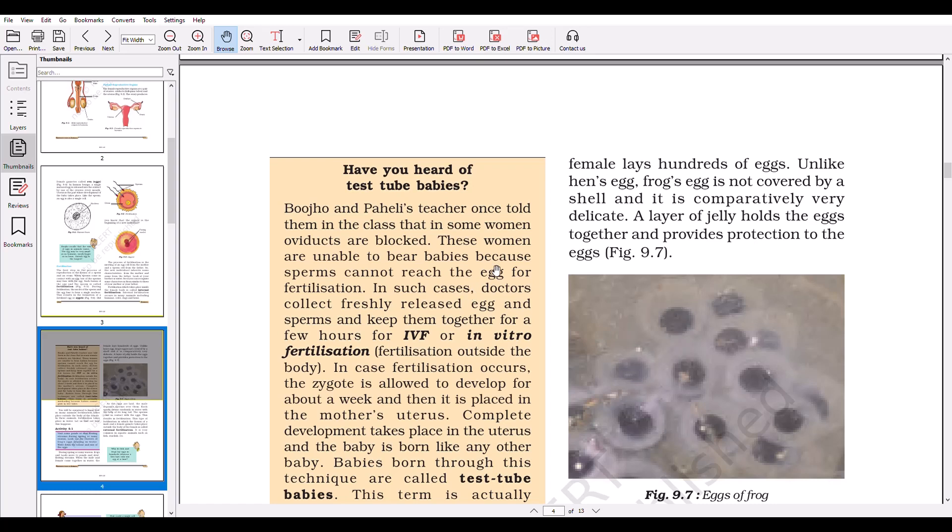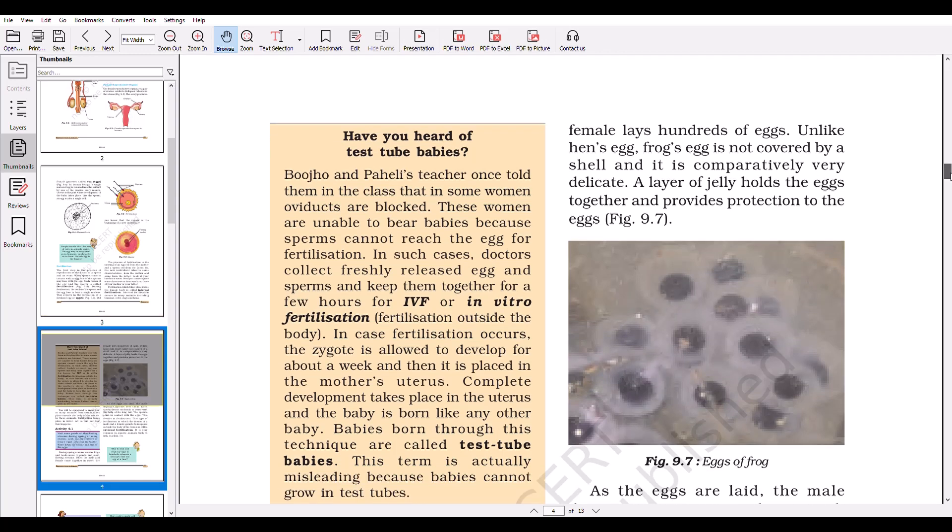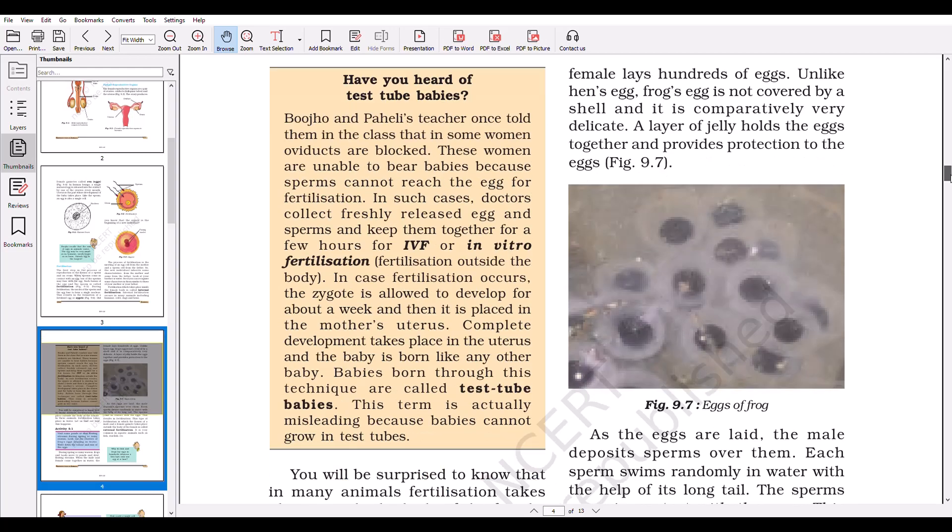Have you heard of test tube babies? Do babies really grow in test tubes? It is a misconception. Actually, there are some women in which oviducts are blocked, so these women are unable to bear babies because sperms cannot reach the egg for fertilization. In such cases, doctors collect freshly released eggs and sperms and keep them together for a few hours for IVF, or in vitro fertilization—fertilization outside the body. In case fertilization occurs, the zygote is allowed to develop for about a week and then is placed in the mother's uterus. Complete development takes place in the uterus like in other women, and the baby is born like any other baby. So babies born through this technique are called test tube babies. This term is actually misleading because babies cannot grow in test tubes.